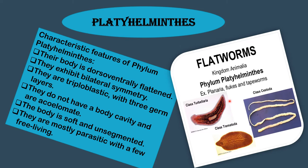Phylum Platyhelminthes comprises worms that have soft, flattened and leaf-like or ribbon-like bodies. They are thus also called flat worms. Flat worms mostly live as parasites inside the body of animals and human beings; some live freely in fresh water bodies and in the sea. They have hooks and suckers on their head around the mouth which help them to grip the body of the host. They have one opening for food intake as well as for expulsion of waste. Tapeworm, liver fluke and planaria are flat worms.